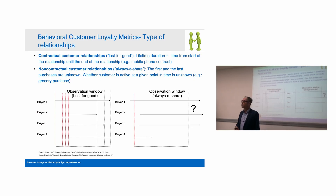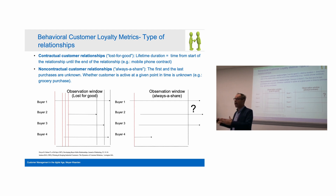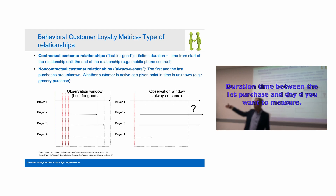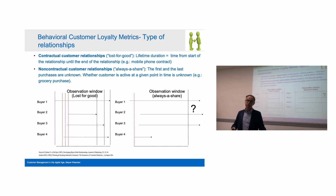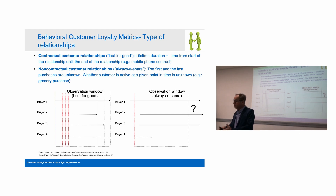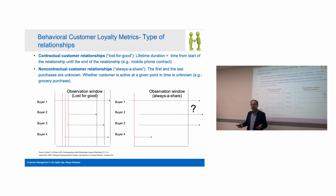Another indicator is the relationship duration — the length between the first purchase and today. You take the time between when the customer bought for the first time and the current date. You want to know how much time the customer has been staying in the database.